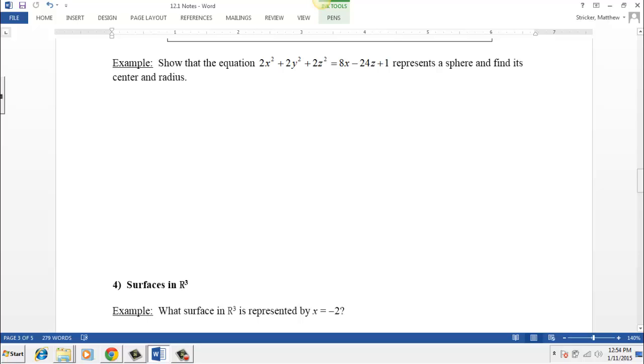And the big thing about completing the square is we need to get all the terms that aren't constants on one side. So we need to get all the x's and the z's, basically this 8x and this negative 24z, we need to get that to the left-hand side. So let me go ahead and rewrite our equation, we have 2x squared plus 2y squared plus 2z squared equals 8x minus 24z plus 1. So we need to subtract 8x over and we need to add 24z to the other side.